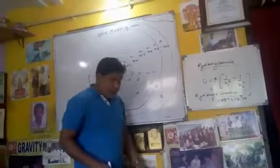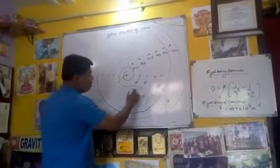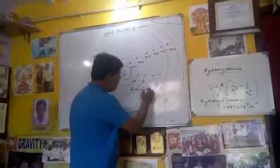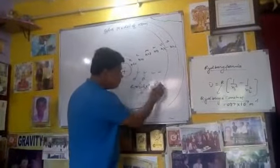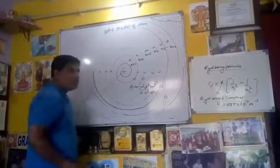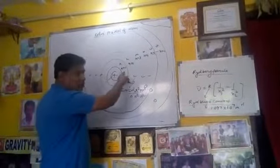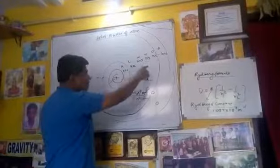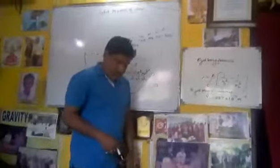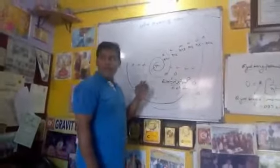To calculate the energy of electrons, the formula is very simple: E_n is equal to 2π²me⁴ divided by n²h². What is h here? h is Planck's constant, n is the number of orbits, m is the mass, and e is the charge of an electron.